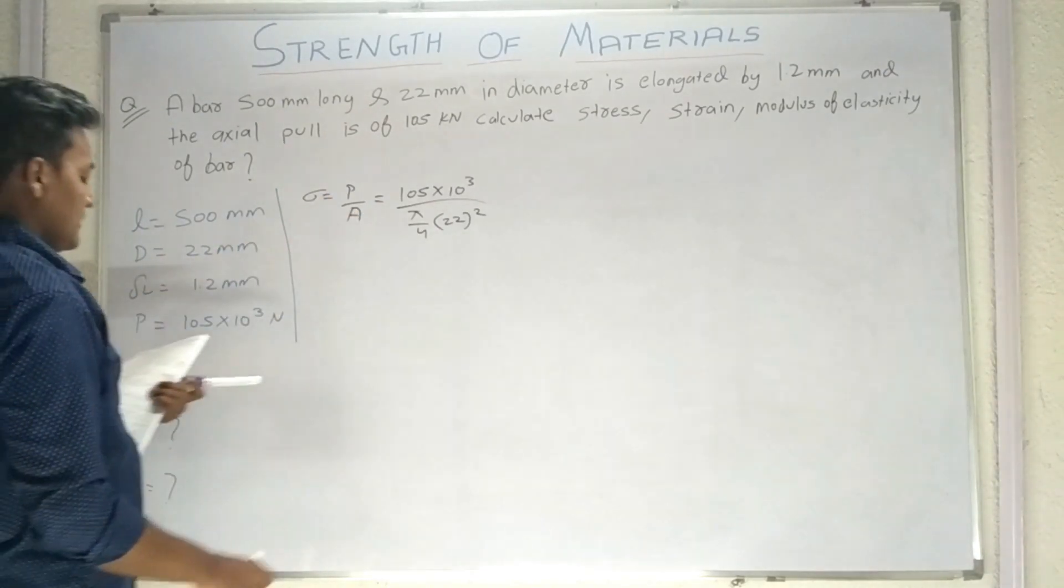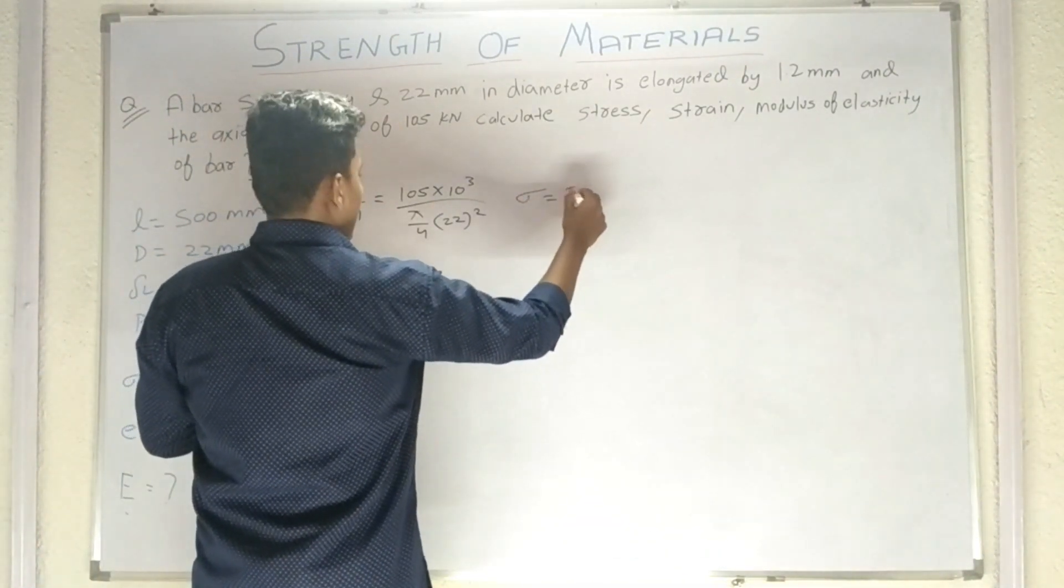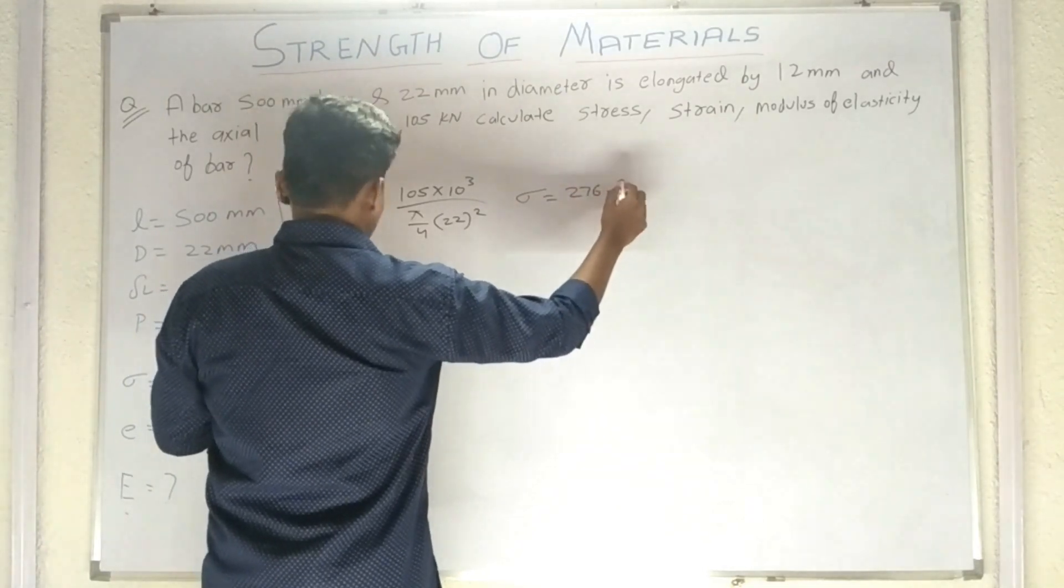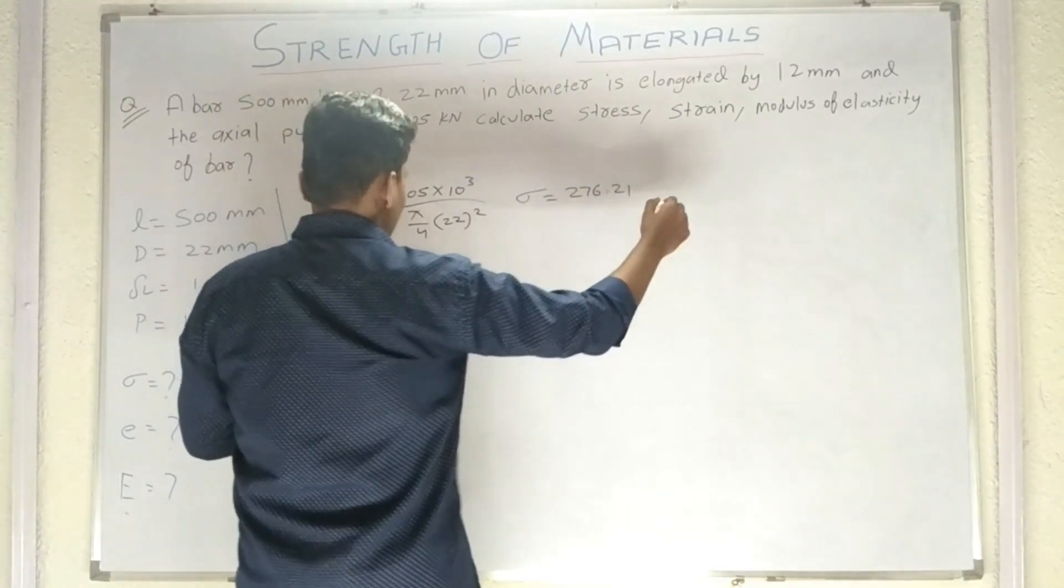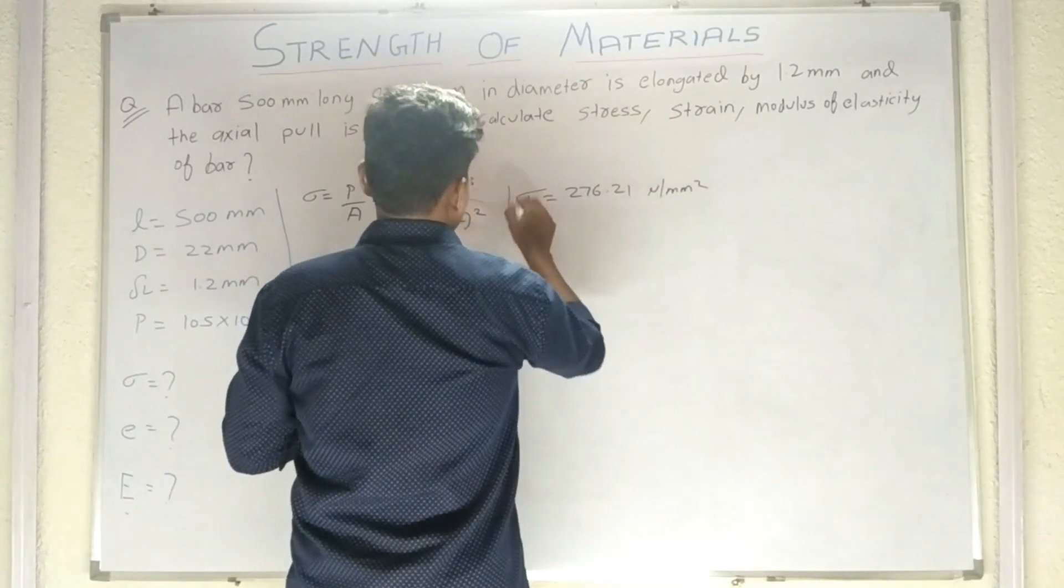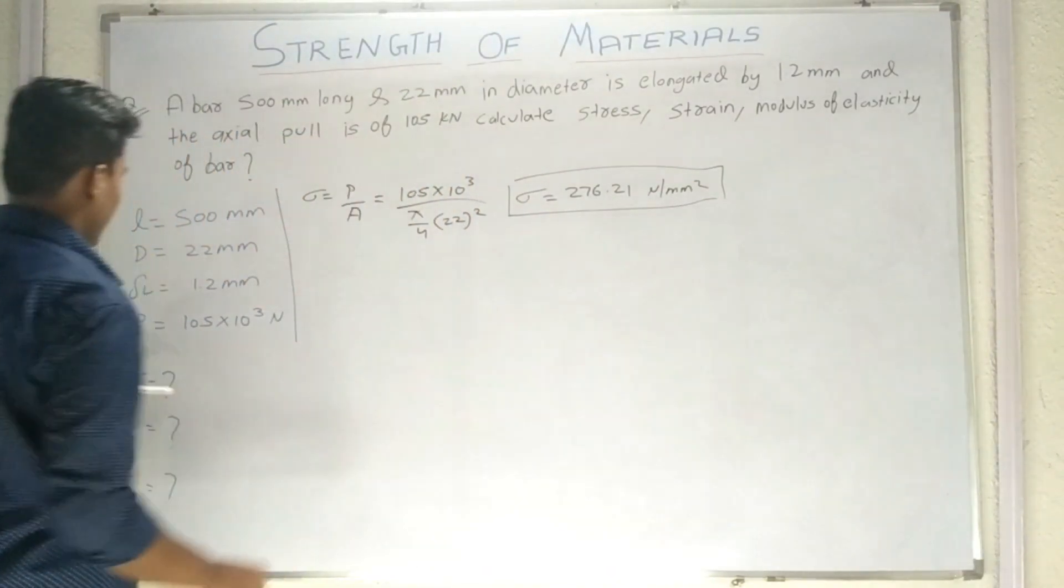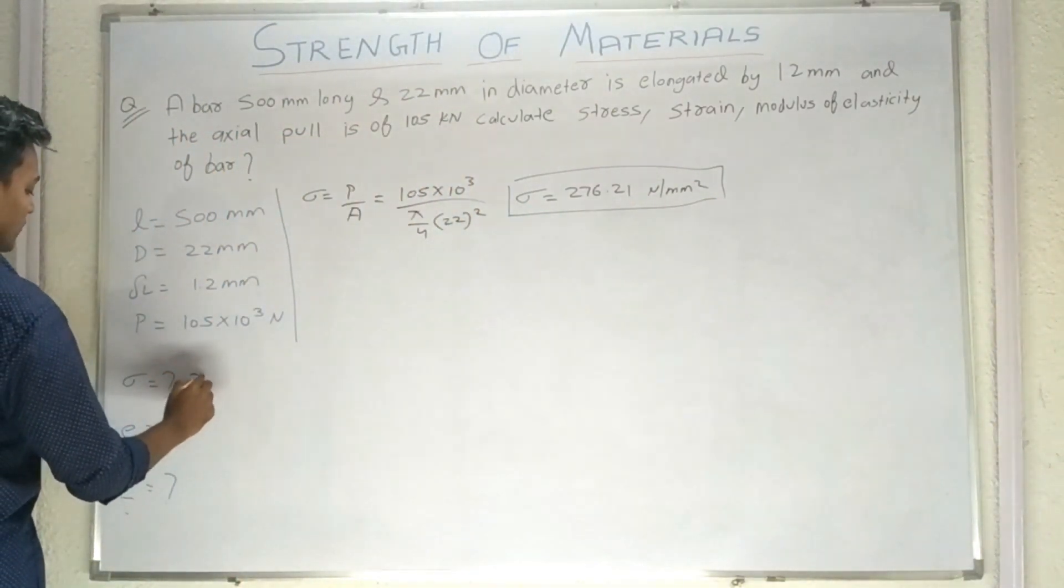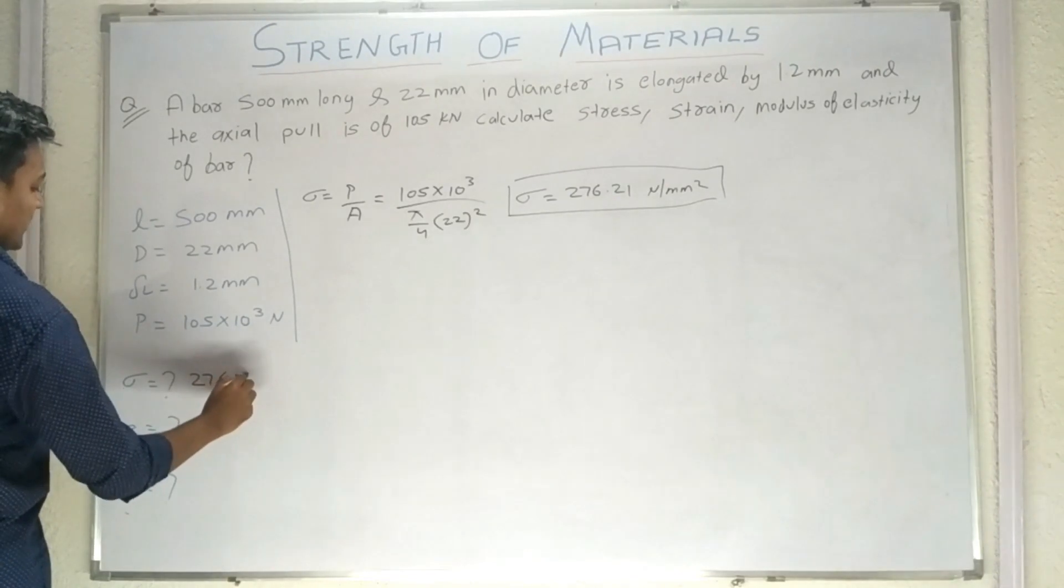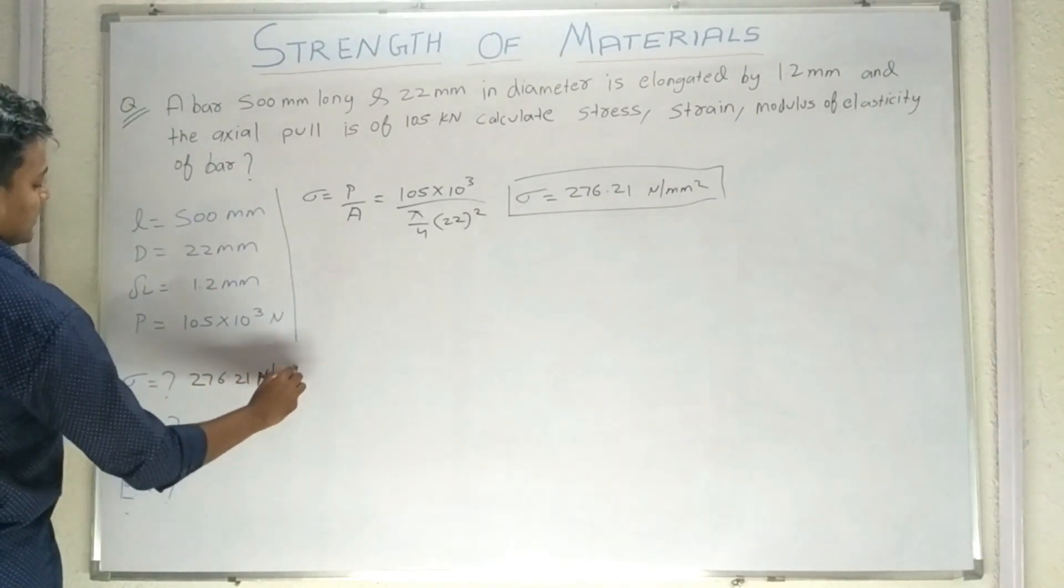So jab ap isko calculate karenge, so sigma ki value nikal ki aayegi 276.21, aur iska unit hoga Newton per mm square. Thik hai, ye hogi aapka sigma, ya aapka nikal jayega 276.21 Newton per mm square.